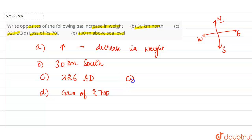Last part E is 100 meter above sea level, so this is 100 meter below sea level.